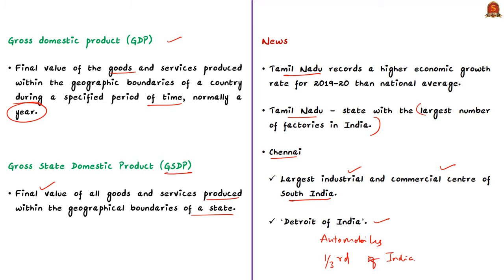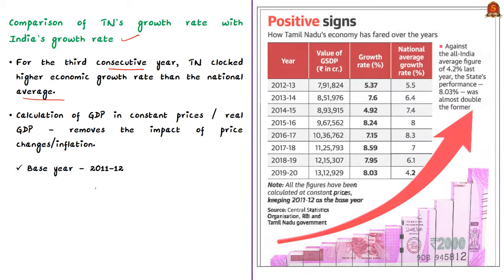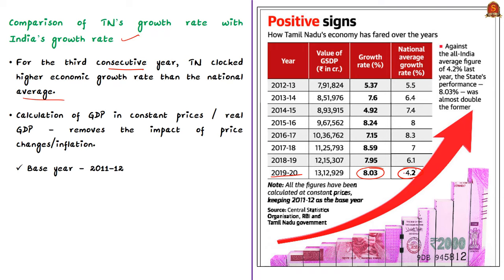Coming to the news article, for the third consecutive year, Tamil Nadu registered a higher economic growth rate than the national average rate. Tamil Nadu's growth rate was about 8.59% in the financial year 2017-18 when the national average growth was about 7%. Similarly, in the year 2019-20, the national growth rate is about 4.2% while Tamil Nadu has a growth rate of 8.03% — almost double the national average. The article says that the given calculations on the GSDP have been done at constant prices with 2011 as the base year, and we know that growth calculated at constant prices indicates growth with respect to a base year.